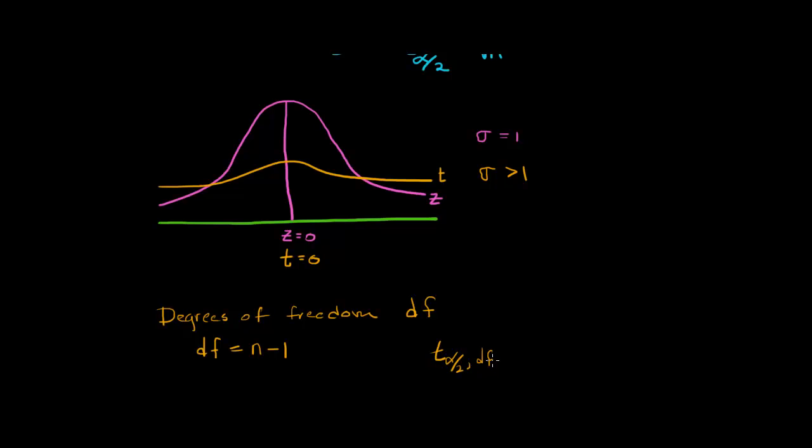So the student t distribution is different for different sample sizes. And like I said, as the sample n gets larger, the student t looks different. It gets more and more like the normal distribution. So when we're going to calculate these critical values, we need to know our degrees of freedom. Now, we can find these critical values using tables or with technology. We will be using technology, the TI-83 or TI-84 calculator, to find our critical values.